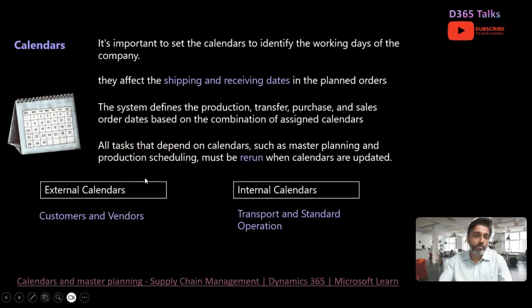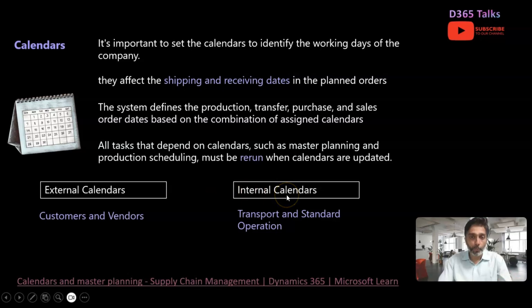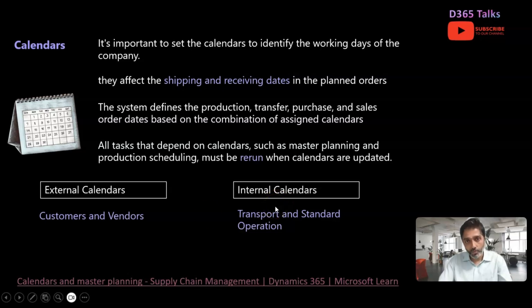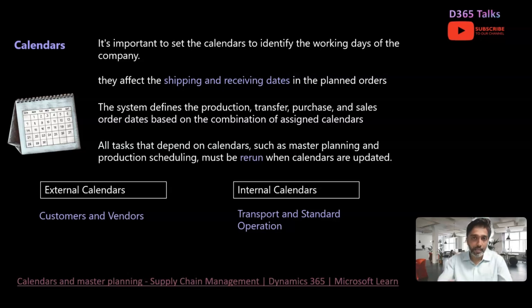As far as calendars are concerned, we will primarily look at two types. One is external calendars, which are more customer- and vendor-focused — you do not primarily have control over these because every organization has its own way of working. You get the information from your vendors or customers and update it in your system so that on those specific days, you send purchase order or sales order confirmations. The second type is internal calendars, which you control to manage your organization's day-to-day operations in terms of warehousing and transportation. Today we will have a quick walkthrough on how to set up and configure the calendars and working times.